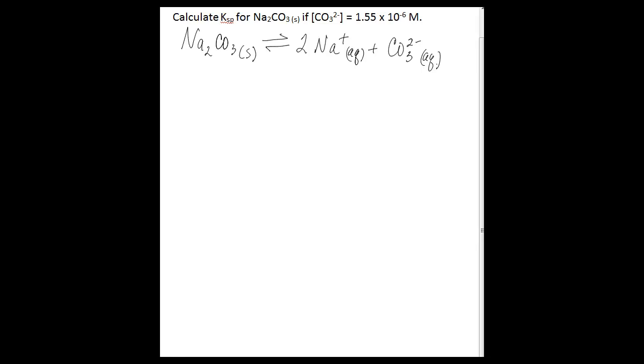In this case, you've only measured one for whatever reason. You've measured the carbonate ion concentration. You don't know the sodium ion concentration, and you want to find Ksp for sodium carbonate.